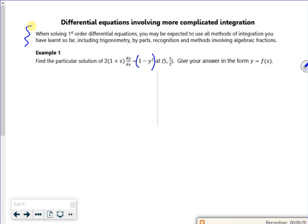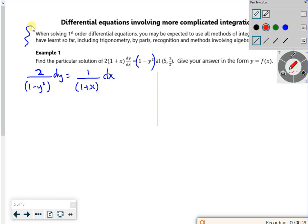So remember you can't plus or minus, you only divide or multiply. So if I want the y's on the left, I've got 1 over 1 minus y squared dy, and that's going to be 1 over 1 plus x dx. I'm going to put some integration signs in front of it, but I've got to be a little bit careful.